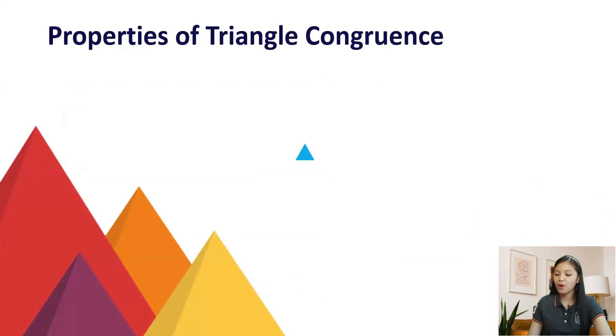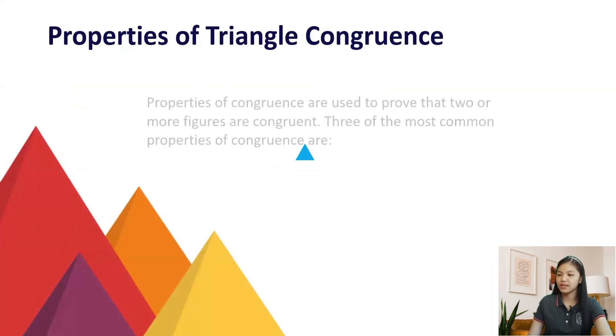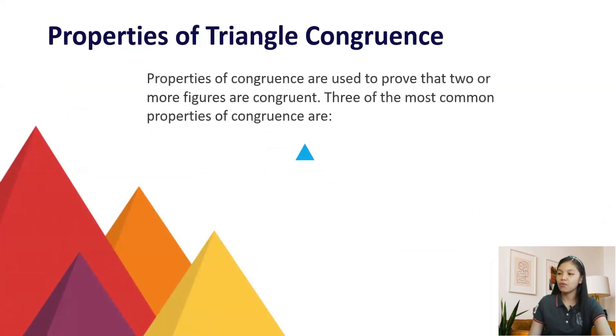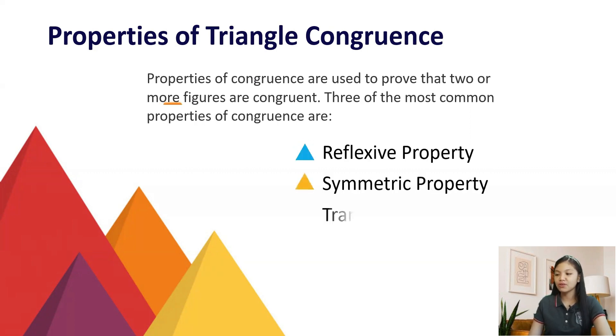Now let's talk about the properties of triangle congruence. Properties of congruence are used to prove that two or more figures are congruent. Three of the most common properties of congruence are reflexive property, symmetric property, and transitive property.